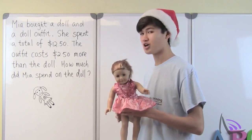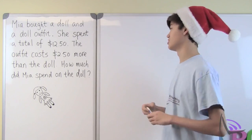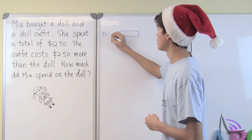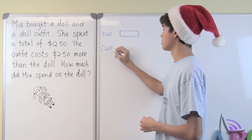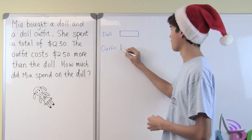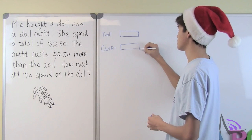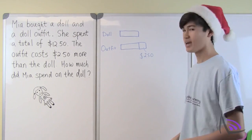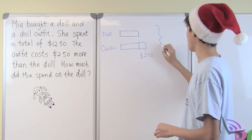The question is: how much did Mia spend on the doll? First, we're going to draw a bar to represent the cost of the doll. Next, we draw a bar diagram for the outfit. Since the outfit is $2.50 more than the doll, we draw a bar equivalent to the doll's bar, and then another bar representing the $2.50. We're told the total cost for both the doll and the outfit is $12.50.